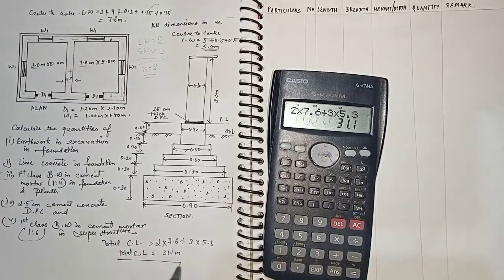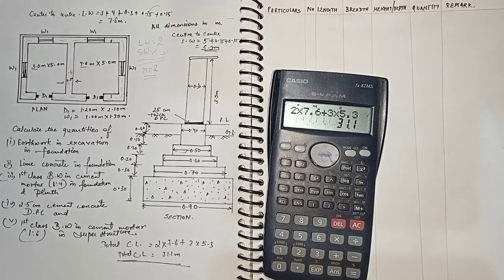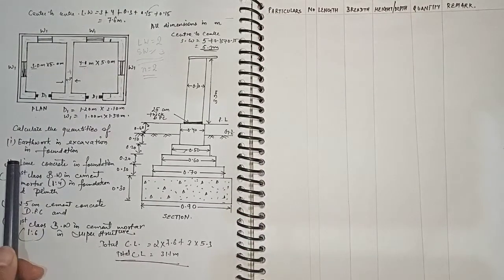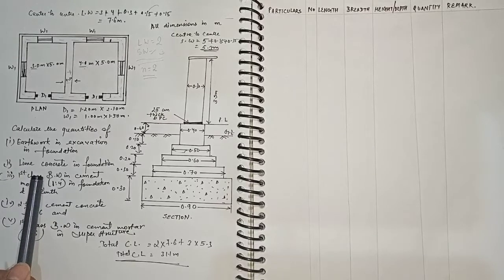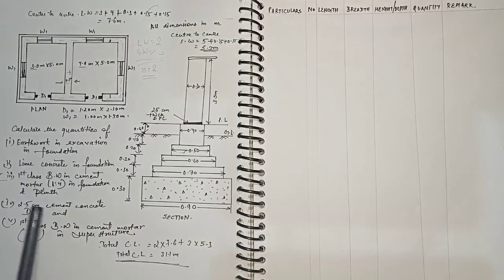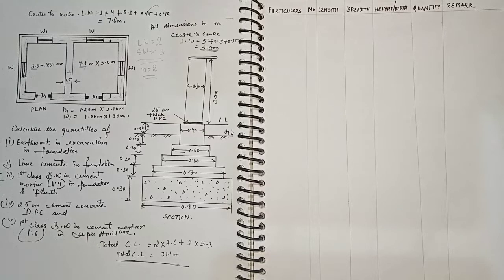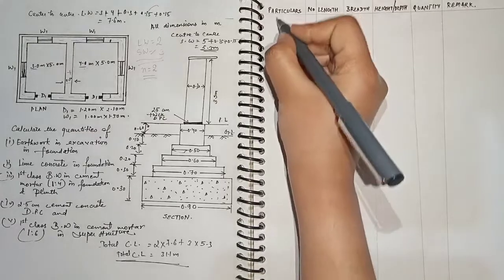Now we have to calculate: earth work in excavation, lime concrete in foundation, first class brick work in cement mortar 1:4 in foundation and plinth, 2.5 centimeter cement concrete DPC, and first class brick work in superstructure with cement mortar 1:6.